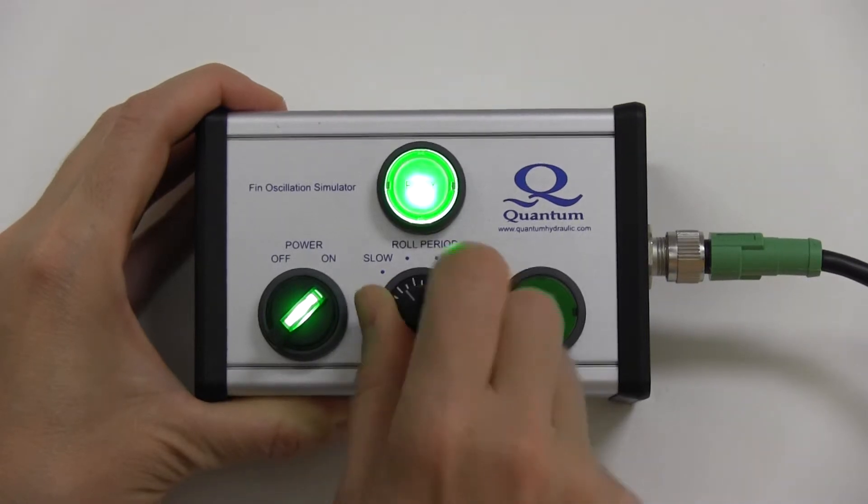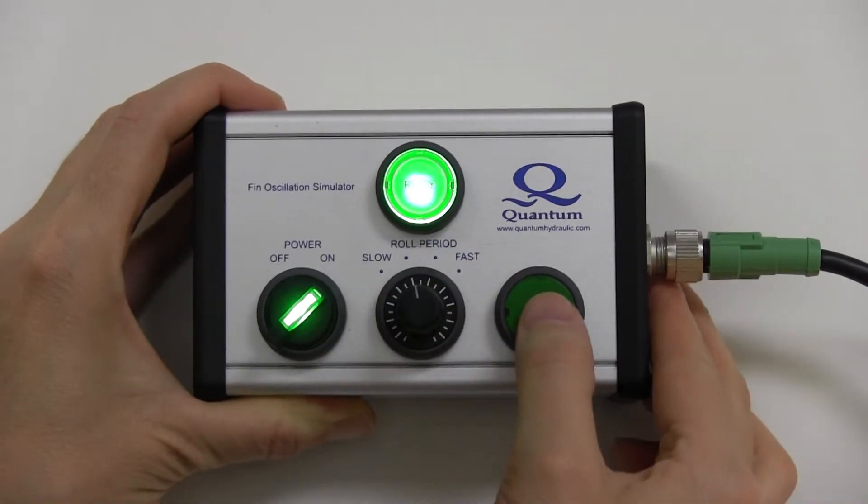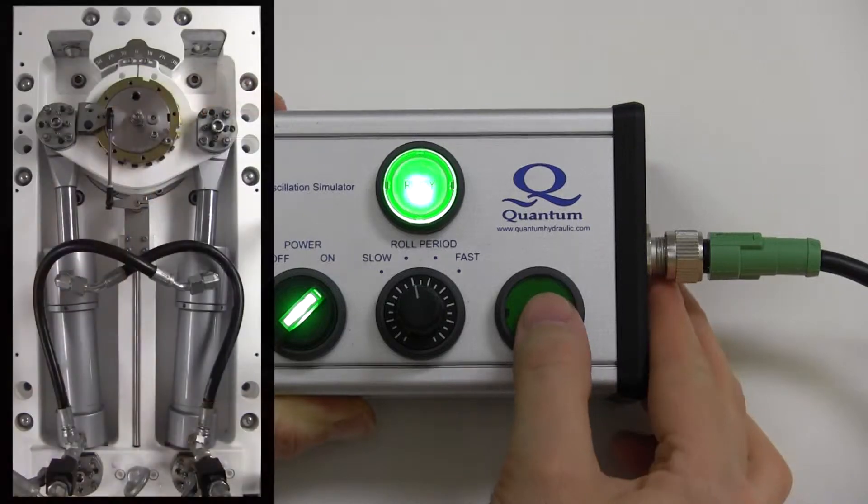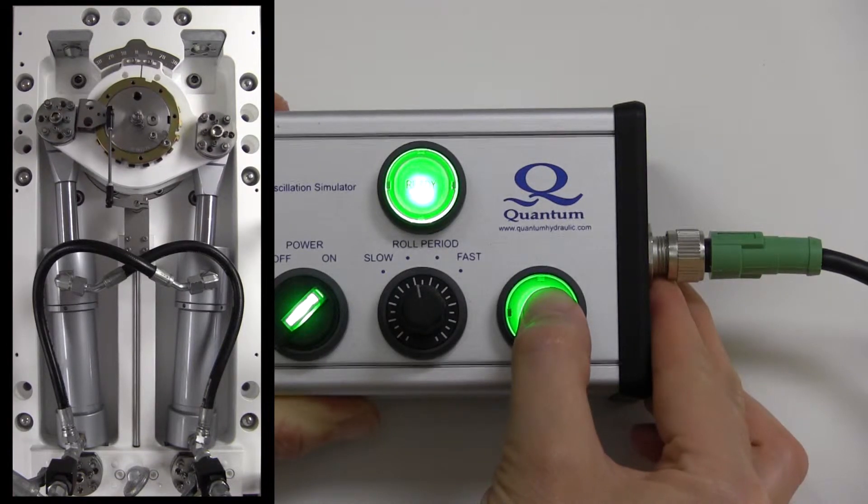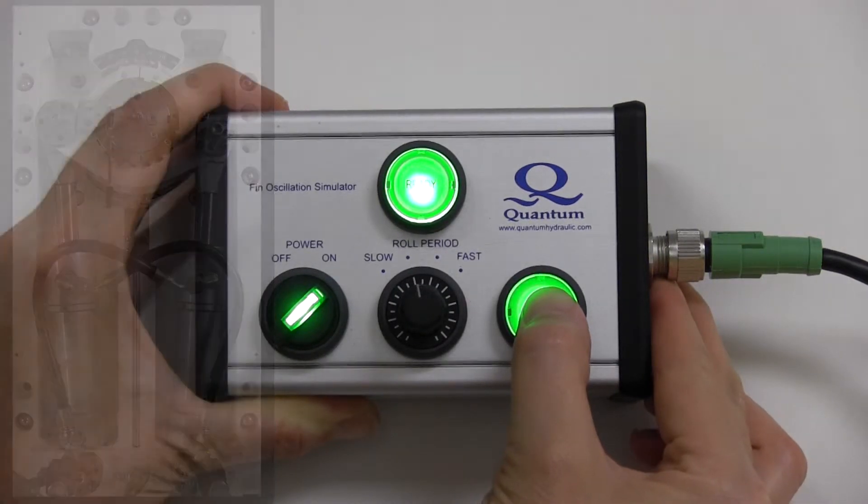To move the stabilizer, set the roll period adjustment on the FIN Oscillation Simulator to the desired oscillation speed. Then press and hold the Move button to cause the stabilizer to oscillate. There are four speeds available.